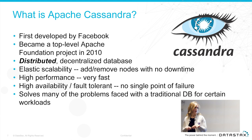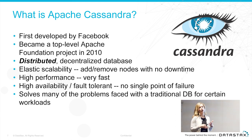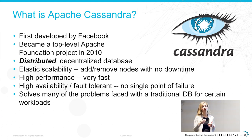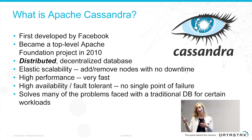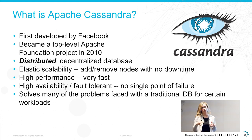Apache Cassandra was developed by Facebook and donated to the open source community around 2008, then graduated to a top-level Apache project in 2010. Having been through that process myself, I can tell you it's a very strenuous process to get your project committed and graduated. So you know this is a product the community has strongly gathered around, and the Apache Foundation is very strong on that.